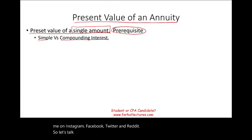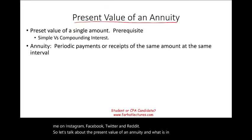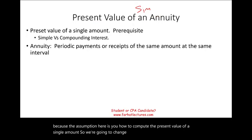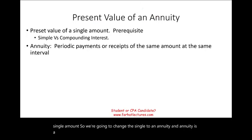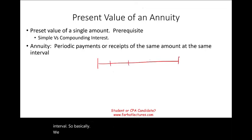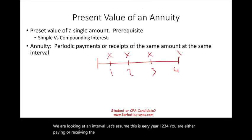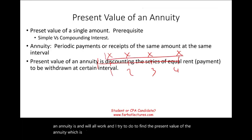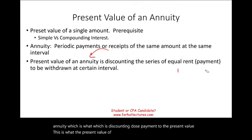So let's talk about the present value of an annuity. An annuity is a periodic payment or receipt of the same amount of money at the same interval. We are looking at an interval — say year 1, 2, 3, 4 — where you are either paying or receiving the same amount at the same interval. The present value of an annuity is a discounting process to find what the value of those series of payments is given a certain interest rate.